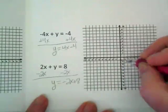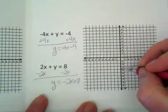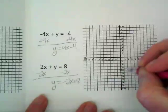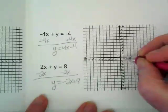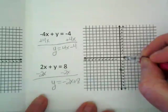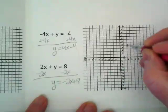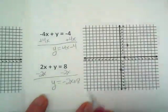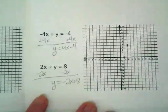So the first equation would get graphed down here. Negative 4 is the y-intercept. Rise up 4 and run over. I'm going to do another one.